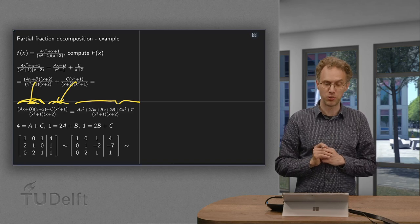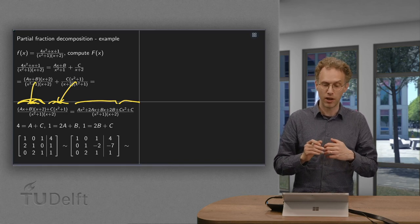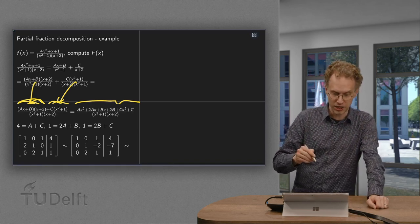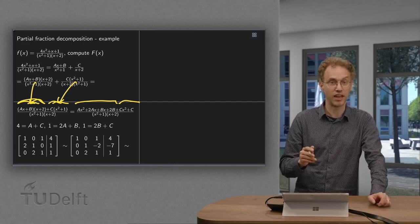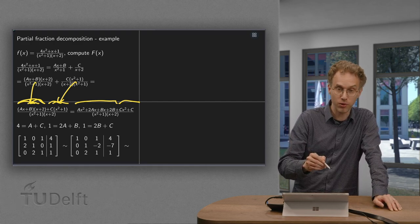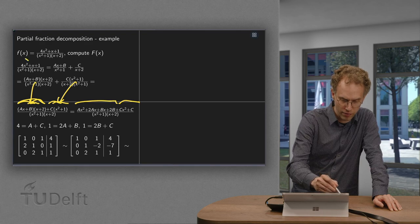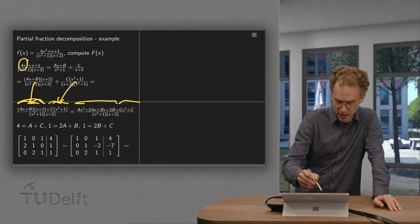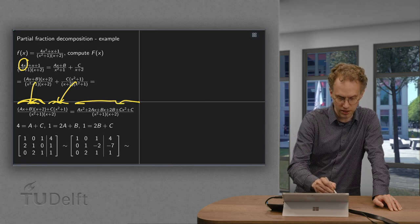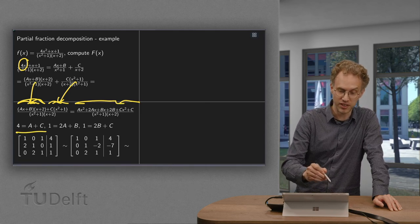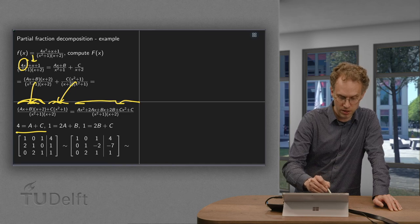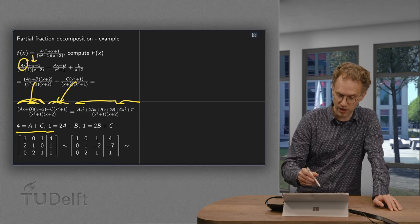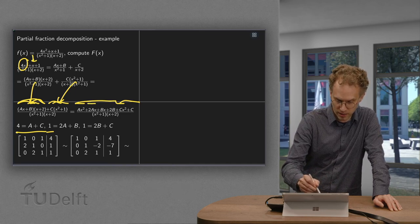And then we have to compare again. What do we have with x squared on the left and the right? We have a 4 times x squared over here. So 4 equals a plus c. So that's our first equation. Then with x's we have a 1. So 1 equals what do we have with x? 2a plus b.